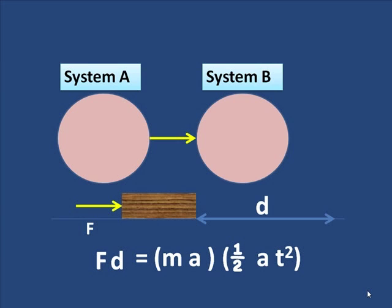Now, acceleration we know is VF minus VI over T, but let's let this start from rest. VI is zero, therefore A equals V over T. And that will represent our final velocity, which is what we want to find. We'll put that in for A. So A becomes V over T.